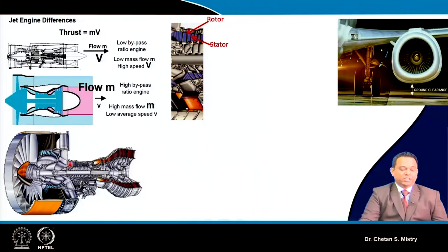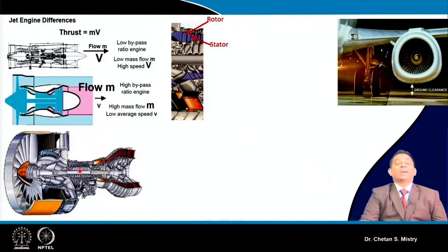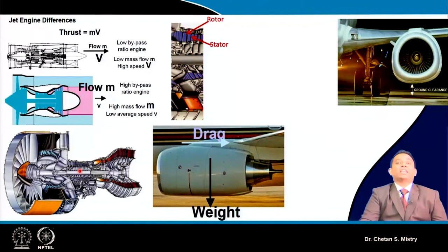Another issue is that the engine has stator and rotor components forming stages. For LP and HP compressors, more stages are needed for higher total pressure rise and higher overall pressure ratio. As we look for larger thrust, we need more stages, which increases engine weight. Increasing engine length also increases drag, which negatively impacts specific fuel consumption.